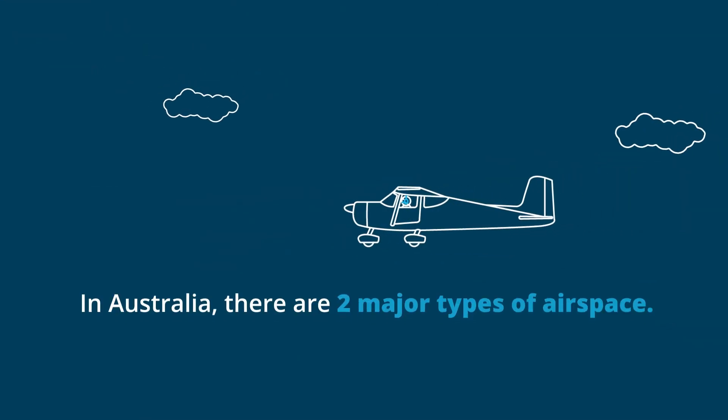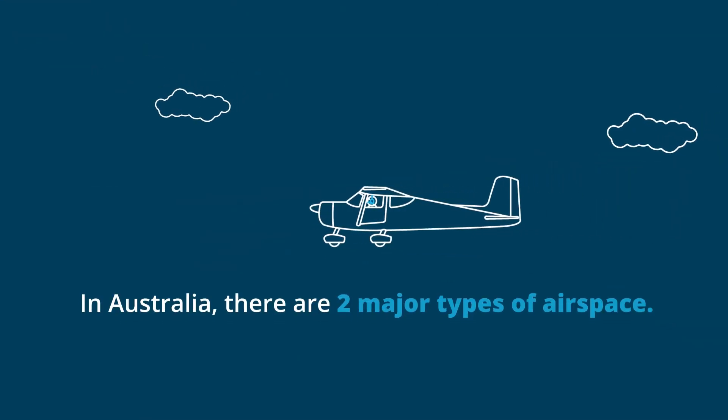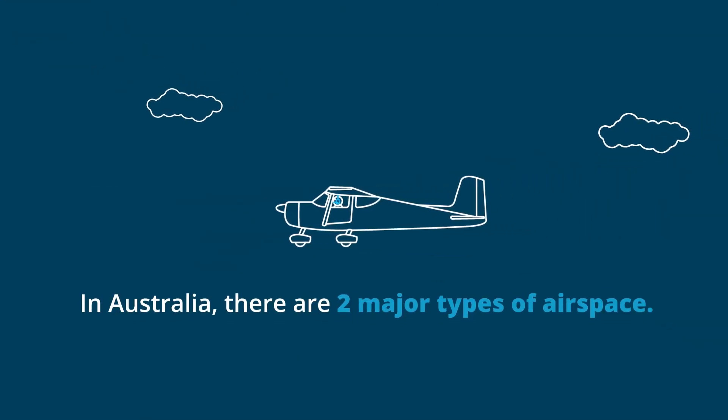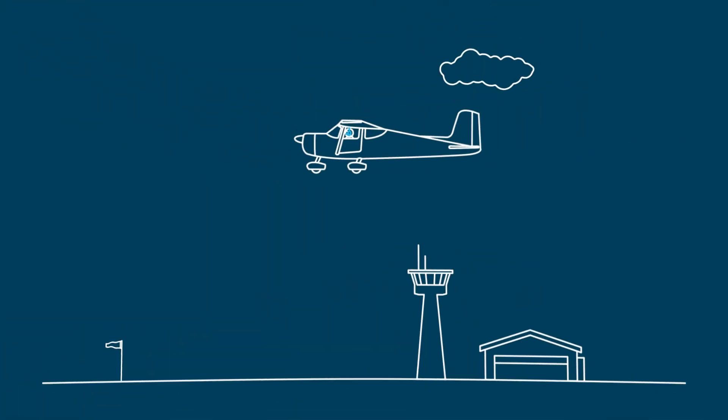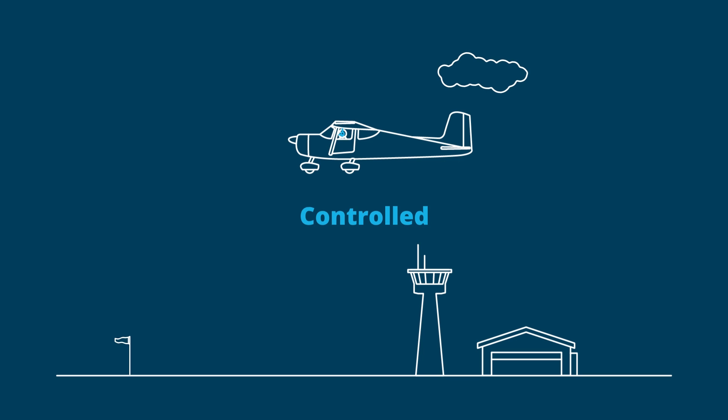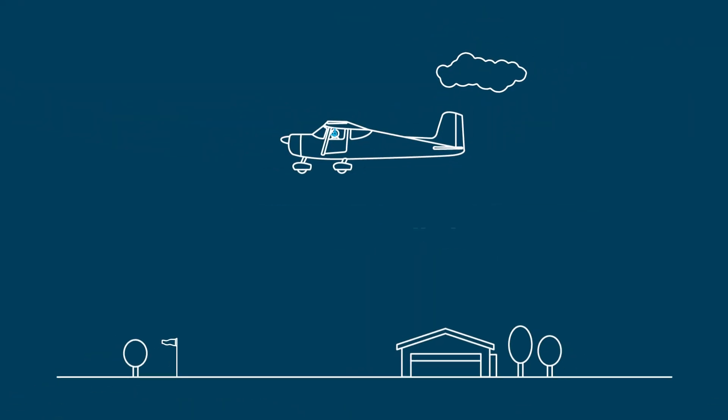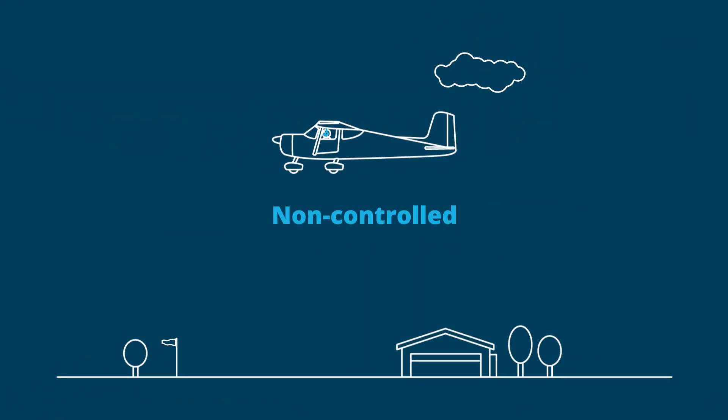In Australia, there are two major types of airspace: controlled and non-controlled.